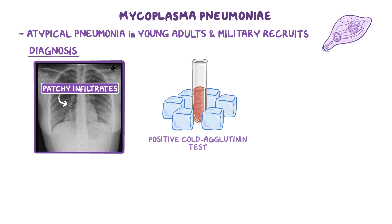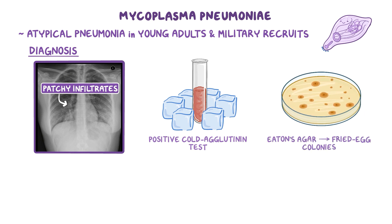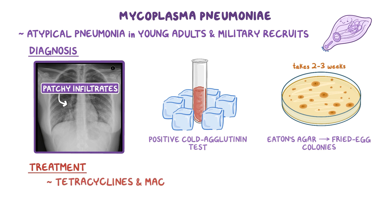Mycoplasma pneumoniae can also be grown on Eaton's agar, forming fried egg colonies, but this takes 2-3 weeks. If the disease does not resolve on its own, tetracyclines and macrolides like erythromycin and azithromycin are used to treat the infection.